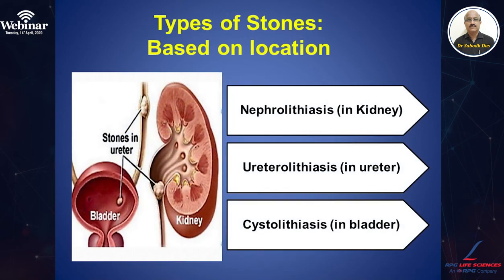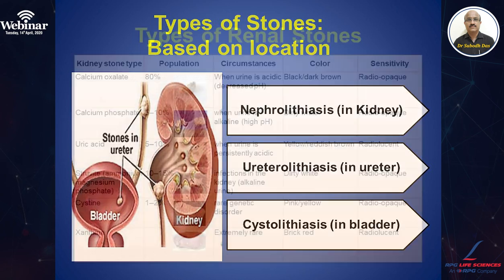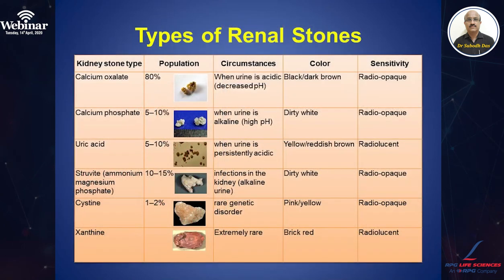Depending on the location, we can categorize stones into renal stones or kidney stones, ureteric stones called ureteral lithiasis, and when they are in the bladder, cystolithiasis. Sometimes stones can get stuck in the urethra — we call them urethral stones, which usually drop down from the bladder.